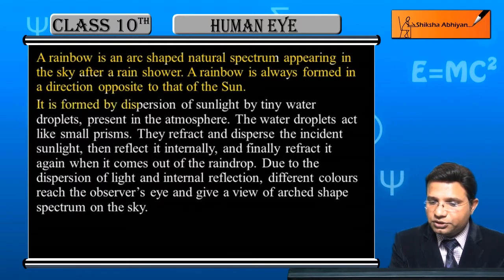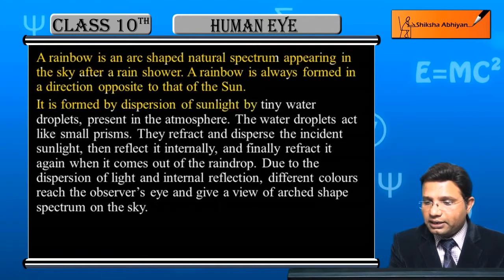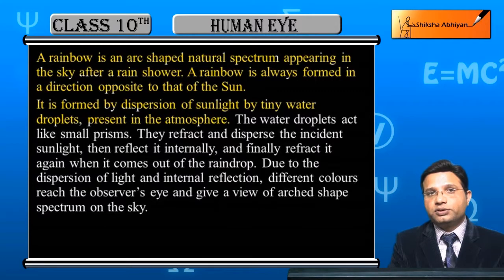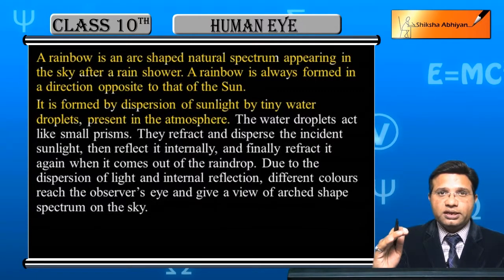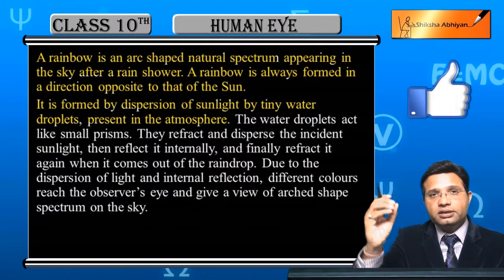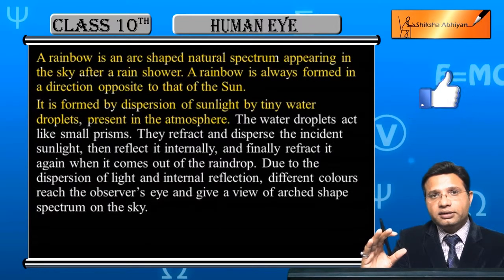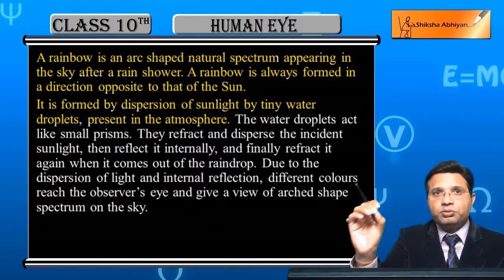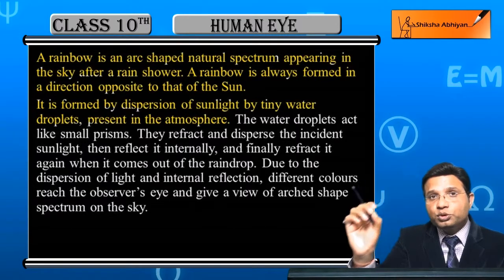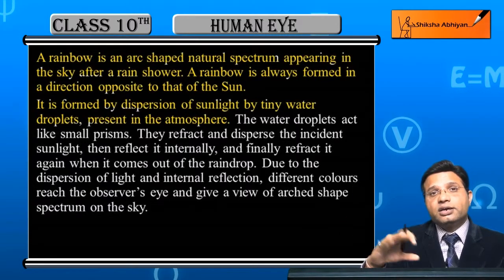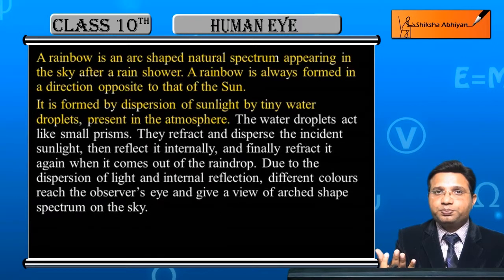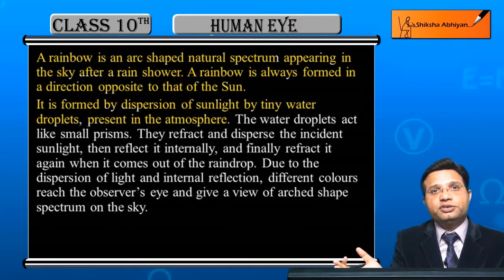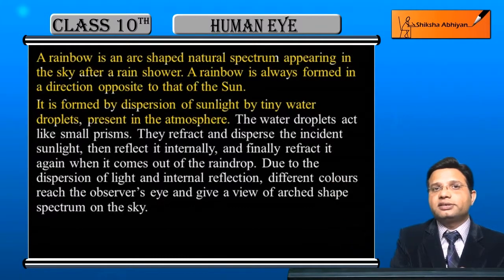It is formed by dispersion of sunlight by tiny water droplets present in the atmosphere. After a rain shower, the water droplets present in the atmosphere — the sun's white light falls on those droplets, and dispersion takes place. White light disperses into seven colors.